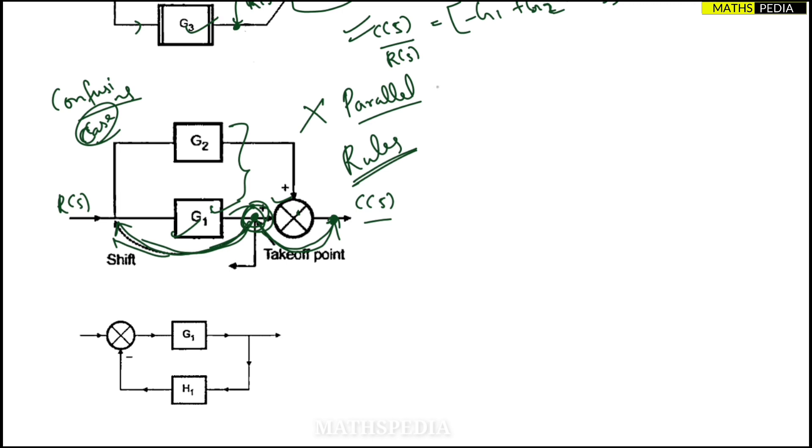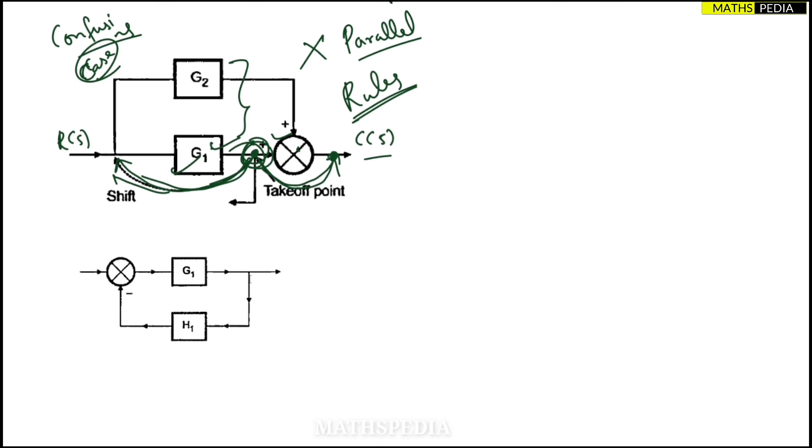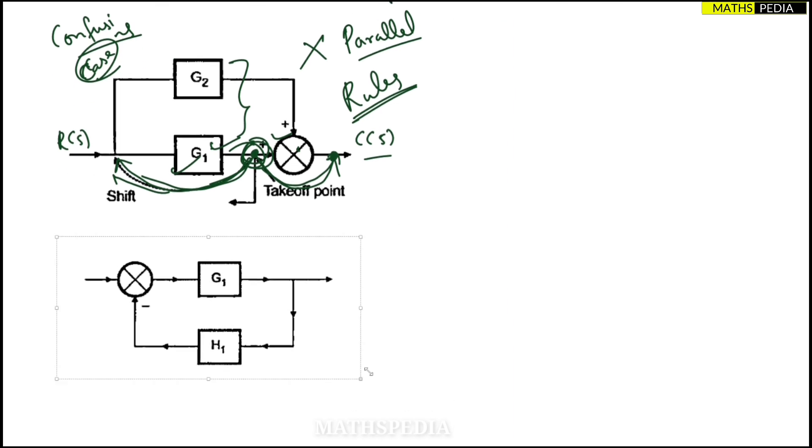And one more thing, in order to identify one more case, I will tell you that whenever you see in parallel cases, these two are not in parallel. Why? R(s), G(s), C(s)—this two, G1 and H1, this is a feedback one. These two are not in parallel. One more point I should tell you for the parallel case: